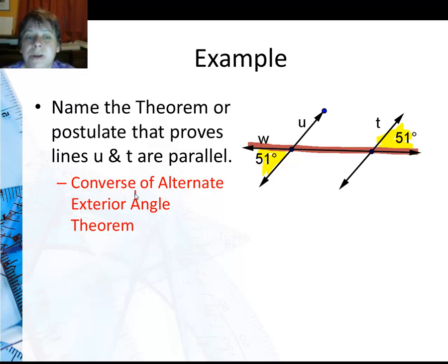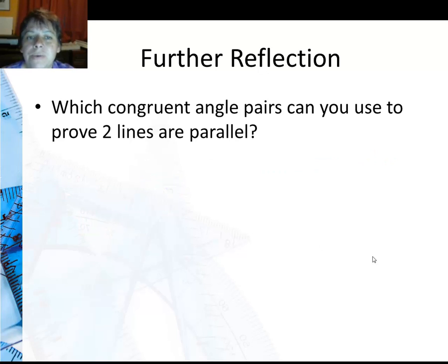When we prove lines are parallel, we use the converse. If we're proving angles are congruent or supplementary, we're not using the converse—we already know the lines are parallel. So for further reflection, which congruent angle pairs can you use to prove that two lines are parallel?